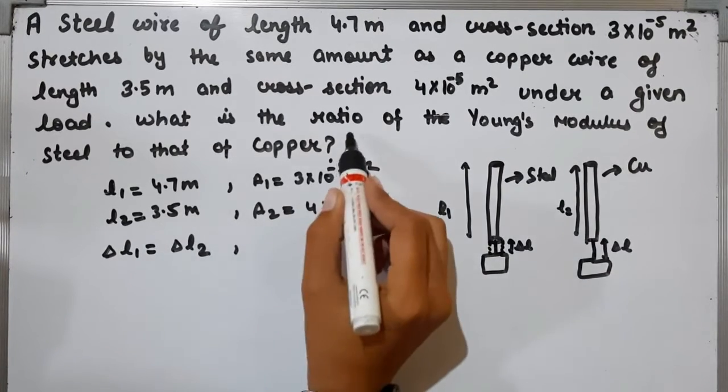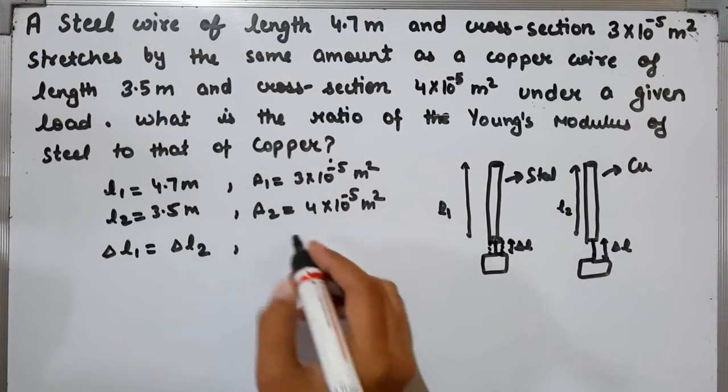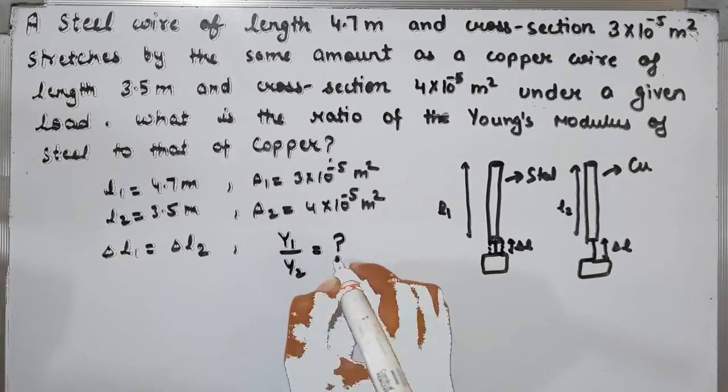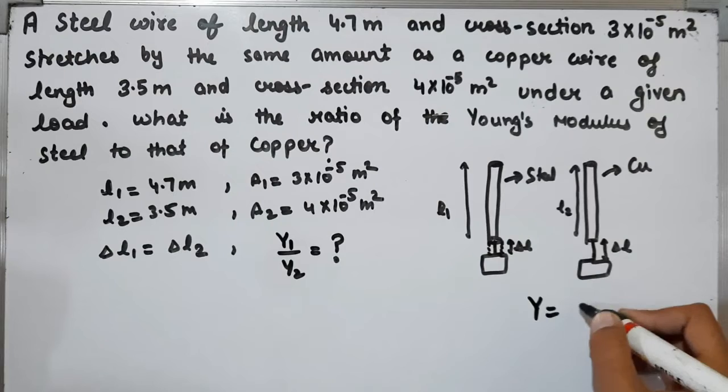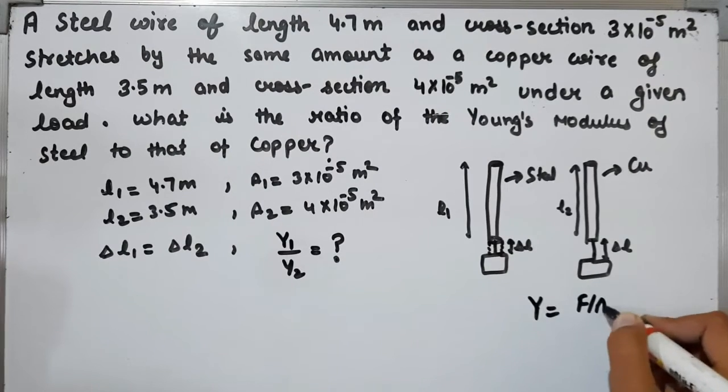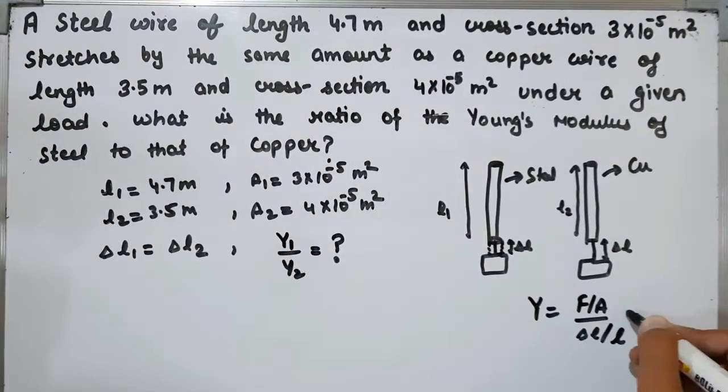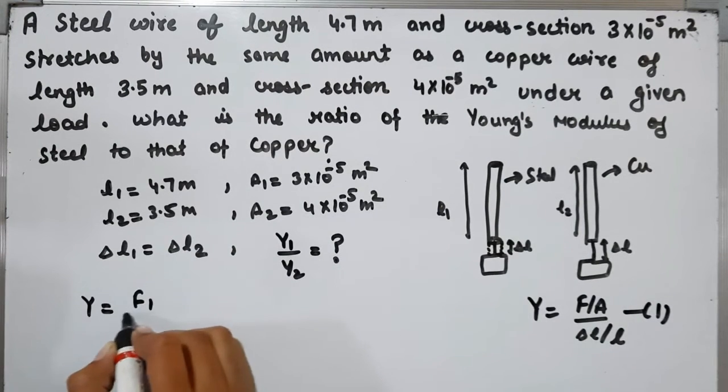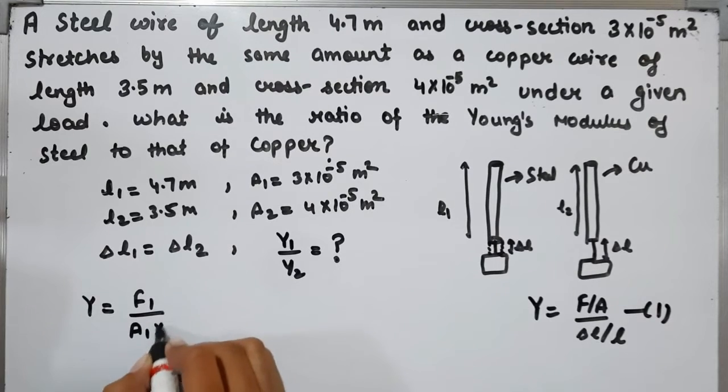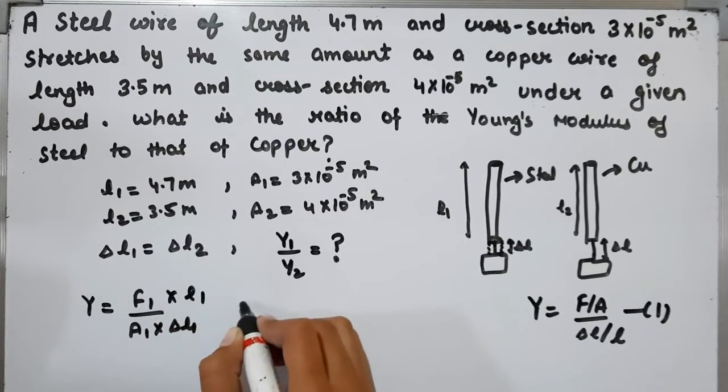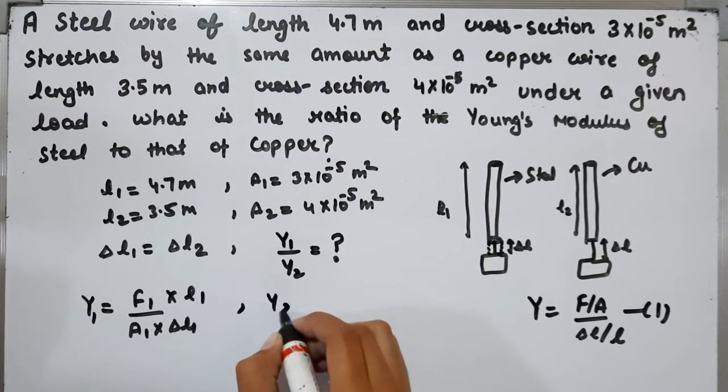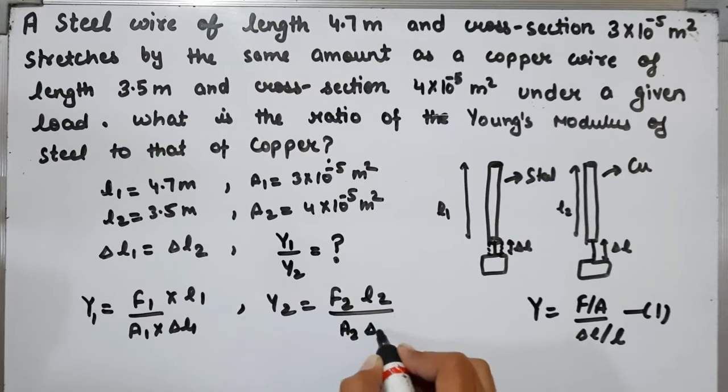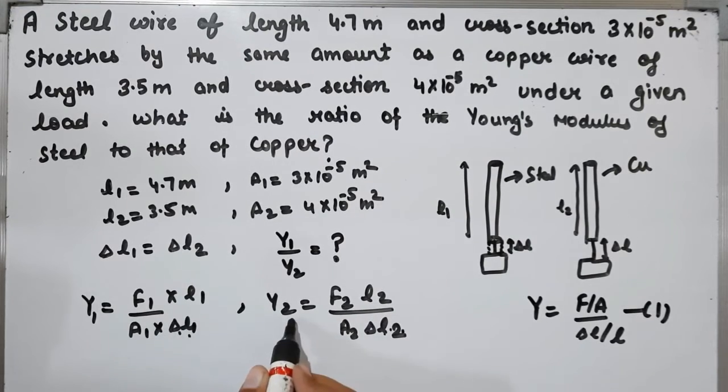We need to calculate the ratio of Young's modulus of steel to copper: Y1/Y2. Young's modulus formula is Y = stress/strain = (F/A)/(ΔL/L). So Y1 = (F1/A1)×(L1/ΔL1) and Y2 = (F2/A2)×(L2/ΔL2).